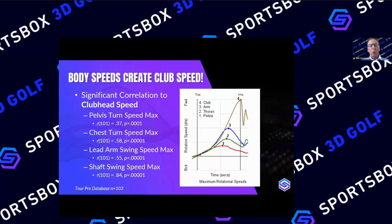This is important because turning speeds of your body and arms contribute directly to clubhead speed. There are statistical correlations showing that higher pelvis speed, higher chest speed, higher lead arm speed, and higher shaft speed all relate to higher clubhead speed, provided they are transferred all the way through to the club.